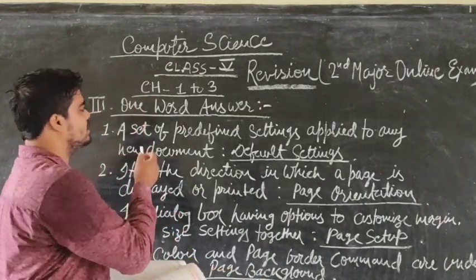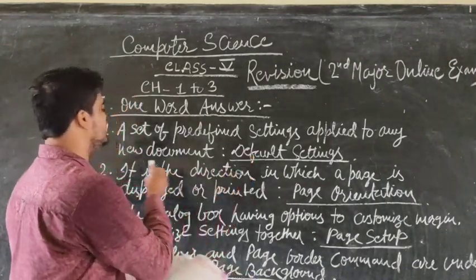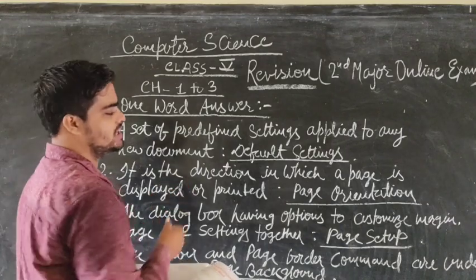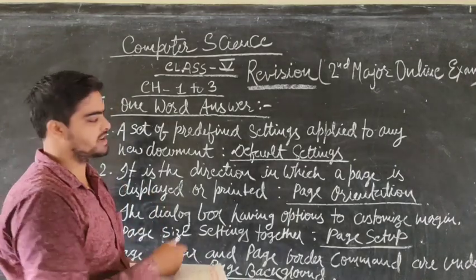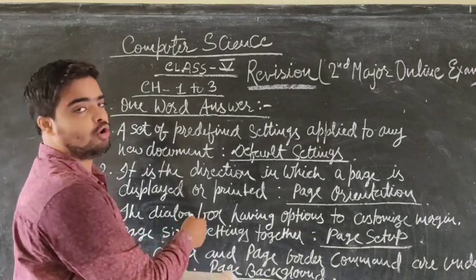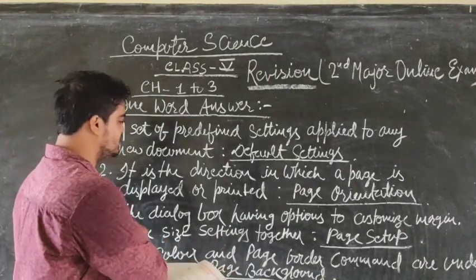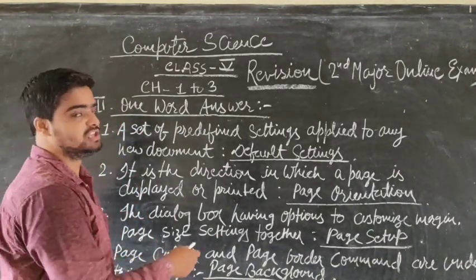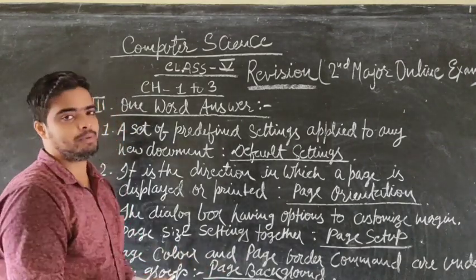Question 3: One word answer. Question 1: A set of predefined settings applied to any new document is called default settings. Question 2: It is the direction in which page is displayed for printing. The answer is page orientation. Question 3: The dialog box having option to customize margin, page side settings together. The answer is page setup. Question 4: Page color and page border command are under this group. The answer is page background group.